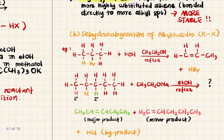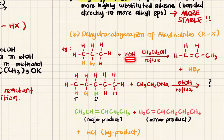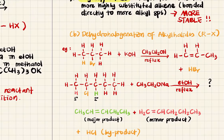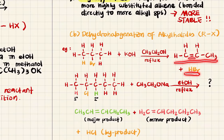For dehydrohalogenation of alkyl halides, an alkyl halide has an R group with a halogen attached. For 1,2-dibromopropane reacting with KOH — write KOH as your reagent — the solvent is ethanol and the condition is reflux. You can remove either of two sets of H and halogen. The product has a double bond, and the byproduct is HBr, since you remove hydrogen and the halogen — that is dehydrohalogenation.